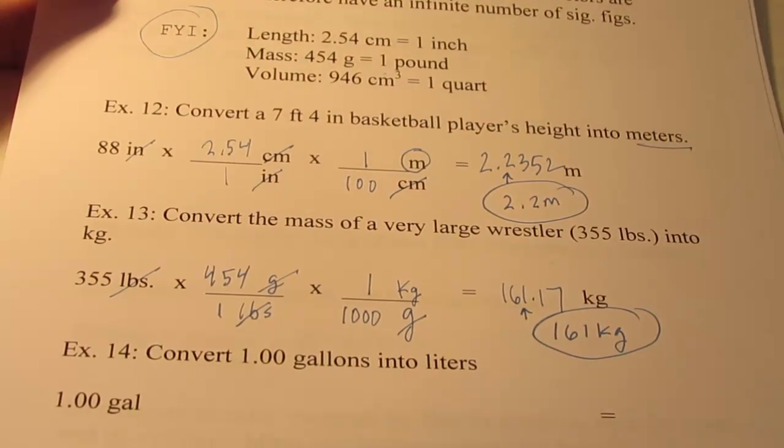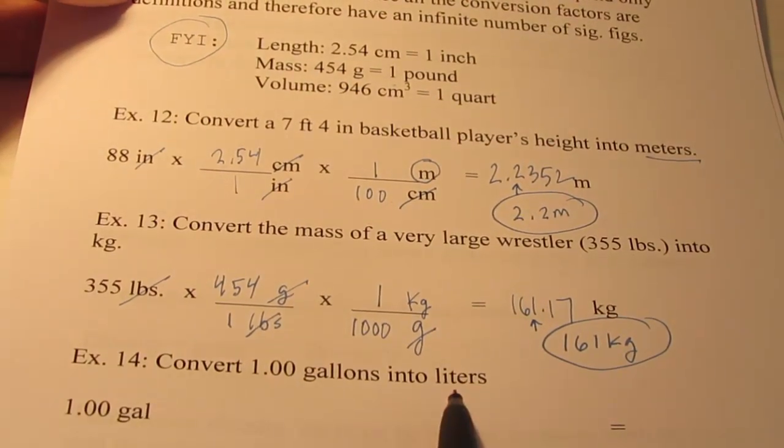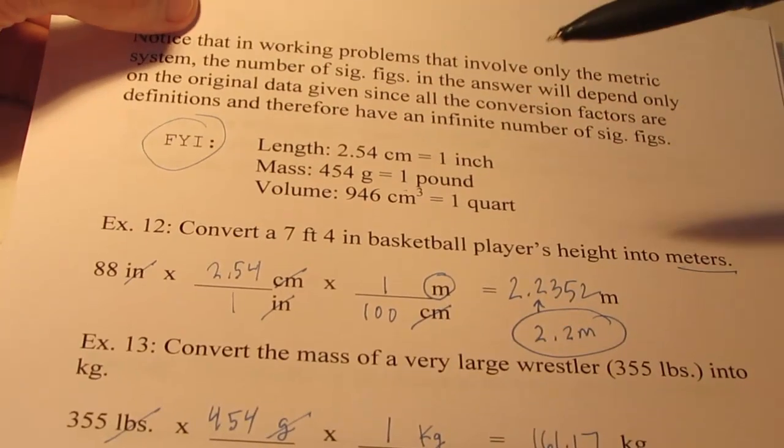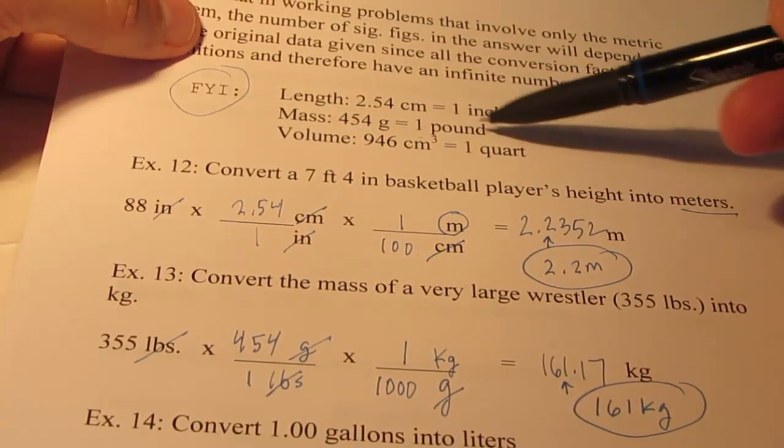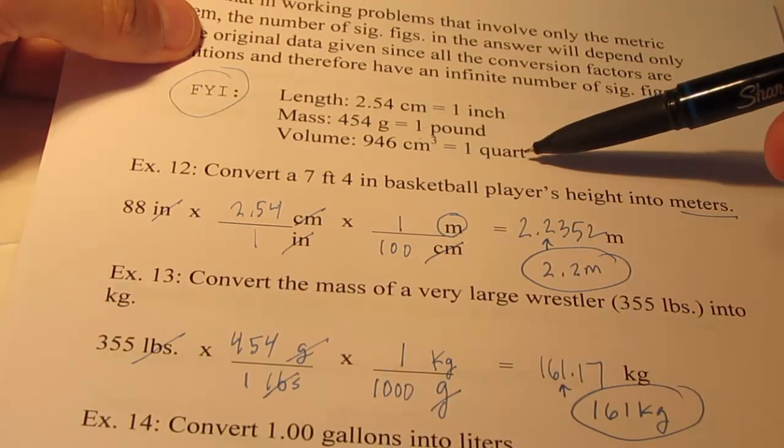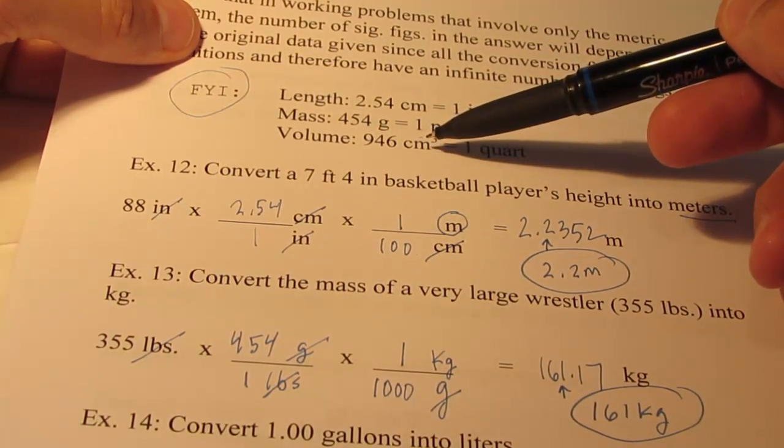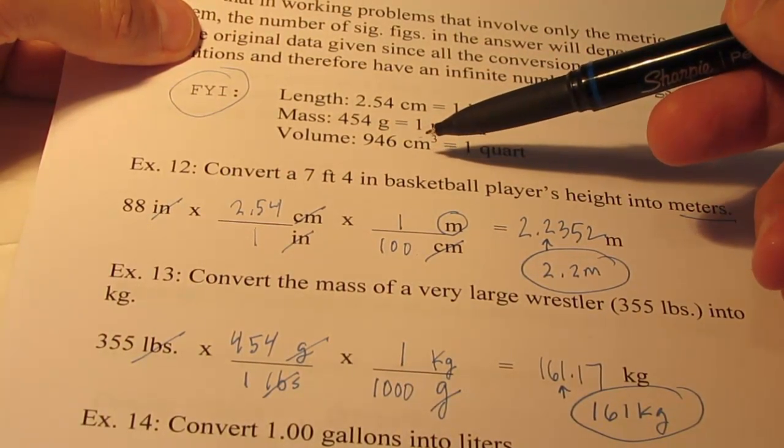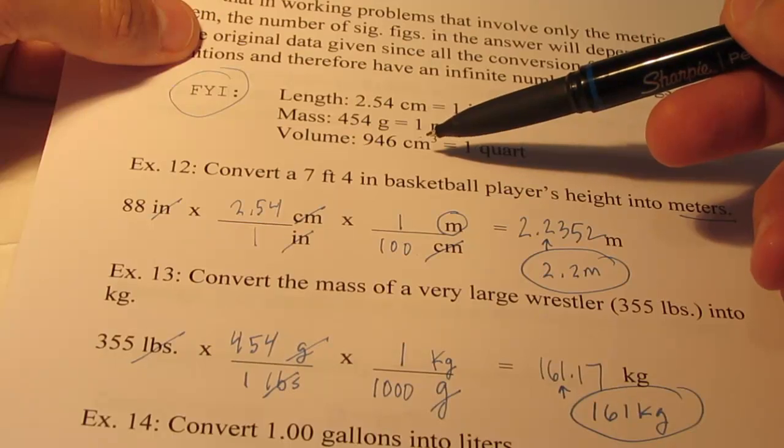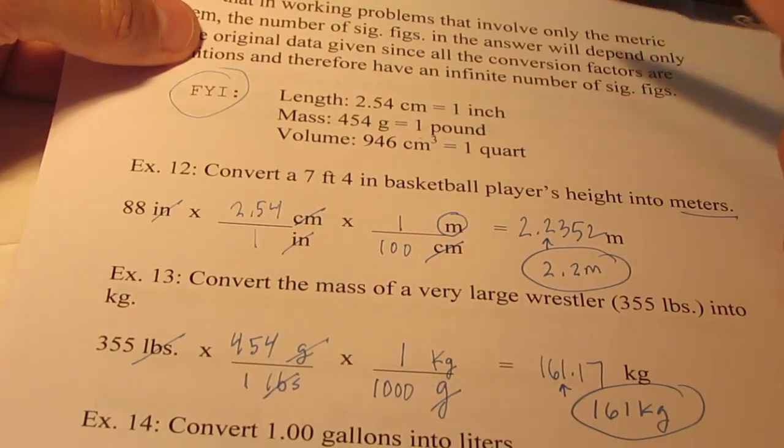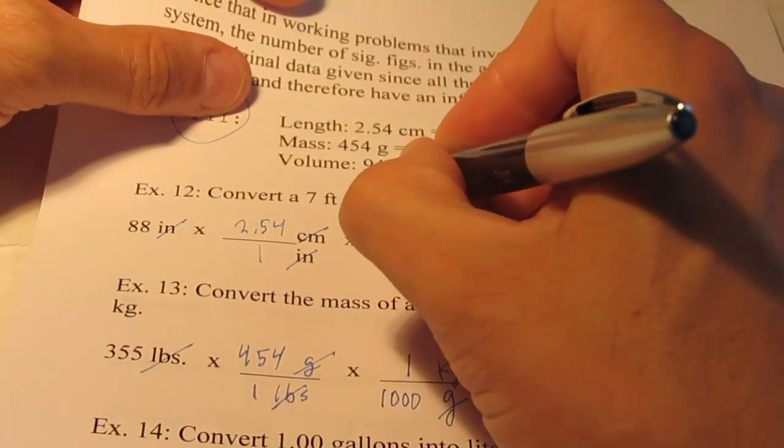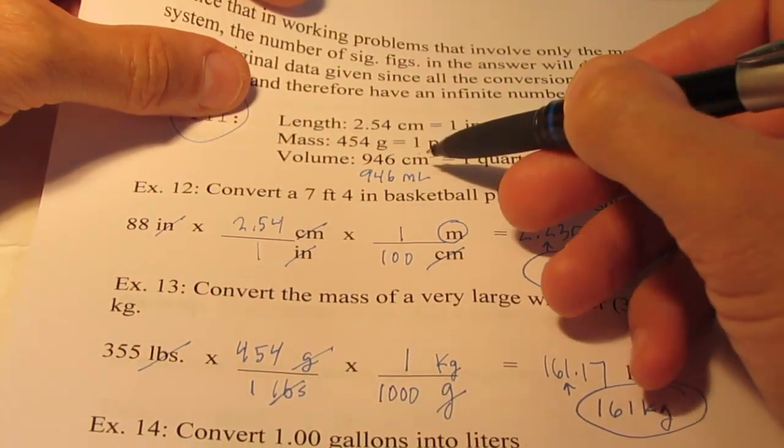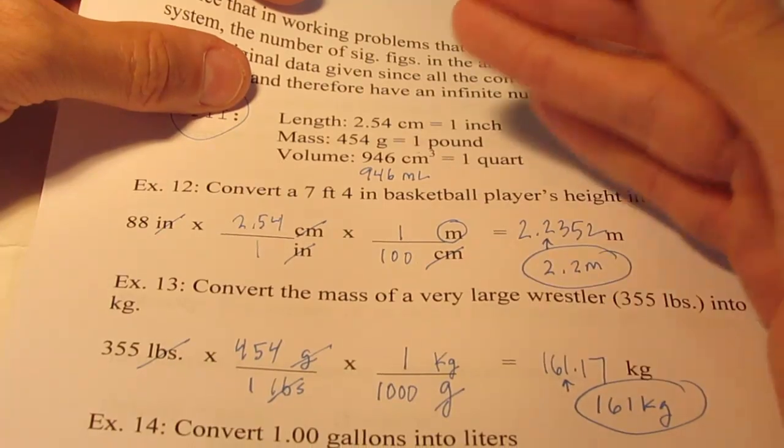Alright. Let's try gallons into liters now. Now I don't have a conversion factor that will go from gallons to liters. But I do have quarts to cubic centimeters. Now remember a cubic centimeter is the same as a milliliter. So we could say one quart equals 946 milliliters because cubic centimeters and milliliters are the same thing.